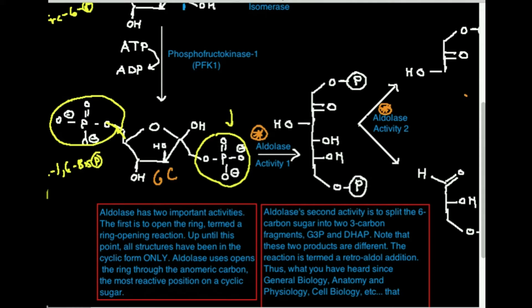Aldolase has two important activities. The first is to open the ring — just termed a ring-opening reaction. So up until this point, all these structures have been in their cyclic form, and that's the only way they exist in this pathway. Aldolase opens the ring through the anomeric carbon, a very reactive carbon. It uses the reactive nature of this anomeric carbon to open the ring into this linear form. The only way the main reaction of aldolase — activity two — can proceed is when you have fructose-1,6-bisphosphate in its linear form, not its cyclic form.